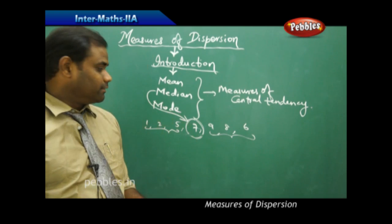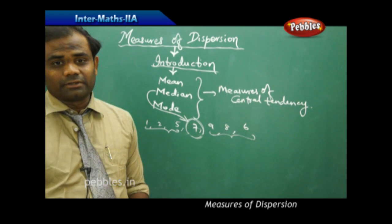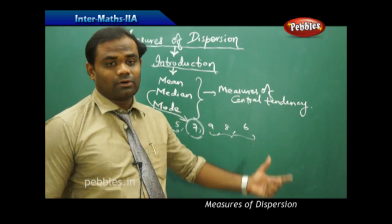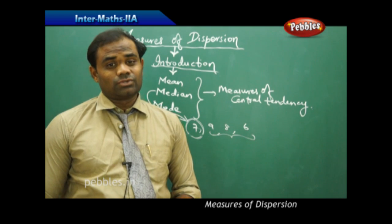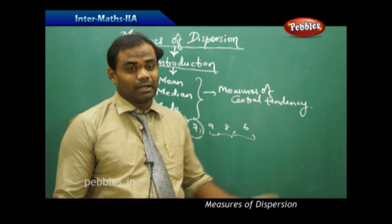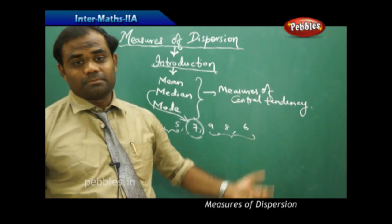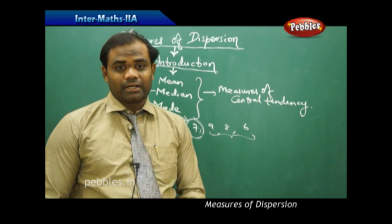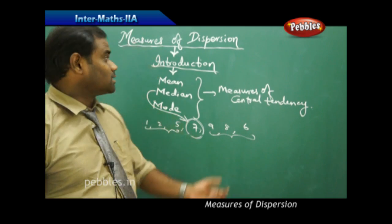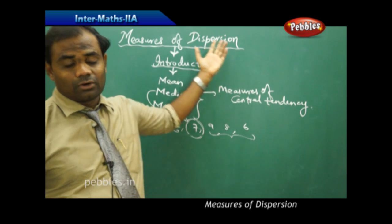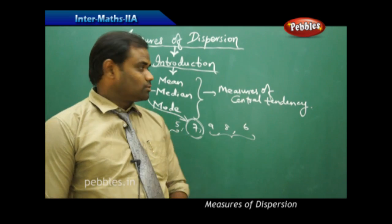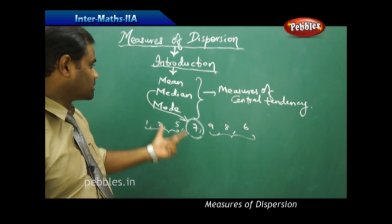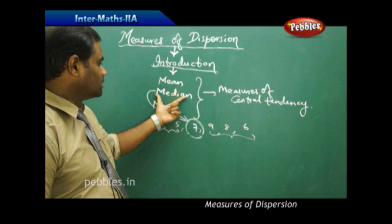So we also have to study the measure of variation — that is, how the data points are varying. Considering the variation of the data is the measure of dispersion, while considering the central tendency is the measure of central tendency. To measure central tendency we have three factors: mean, median, and mode.